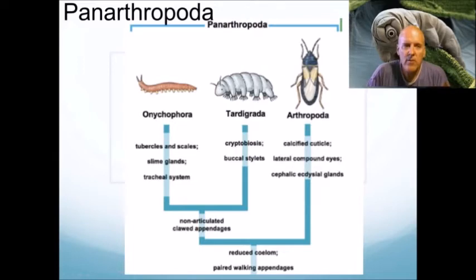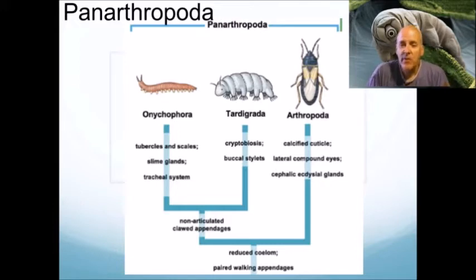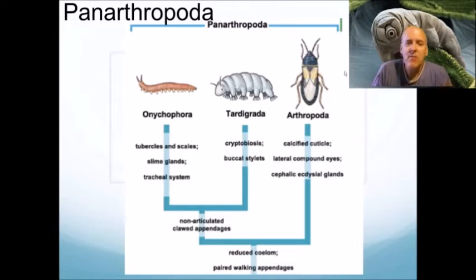Today we're going to talk about the Pan Arthropoda — these are organisms related to the arthropods that share a common ancestor with them. We're going to spend a lot of time on the arthropods because they're the biggest group and really interesting, but we're going to start today talking about the Onychophora and the tardigrades.